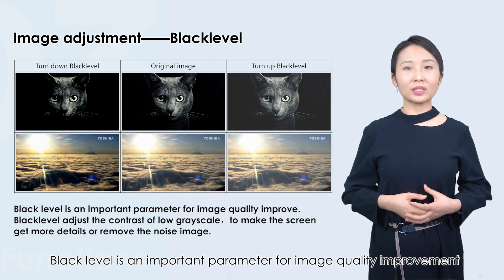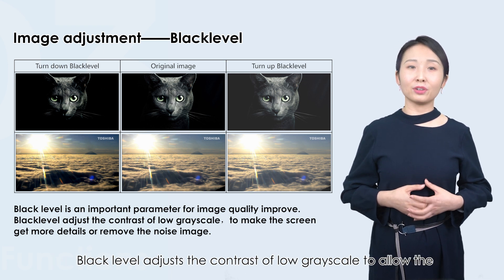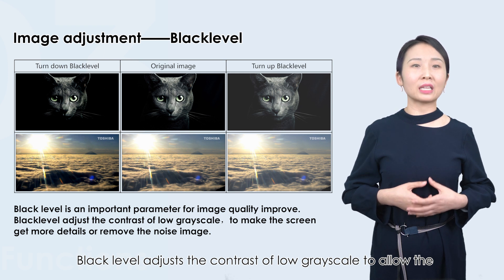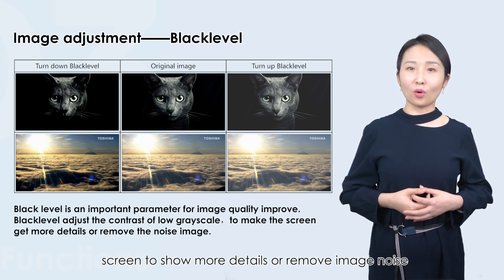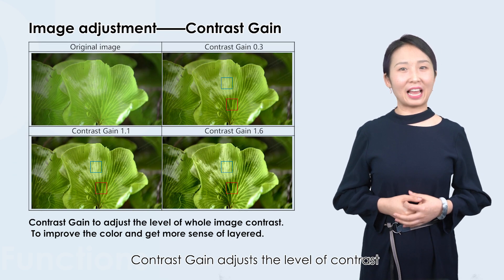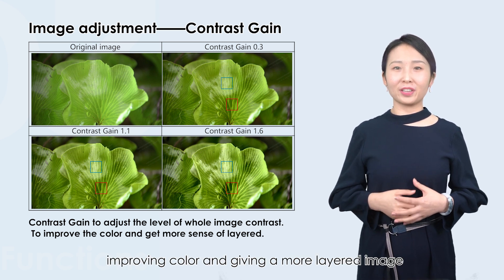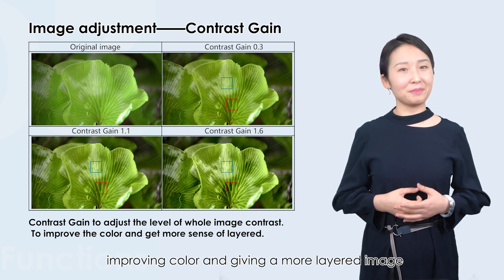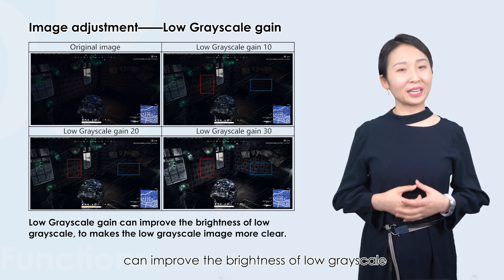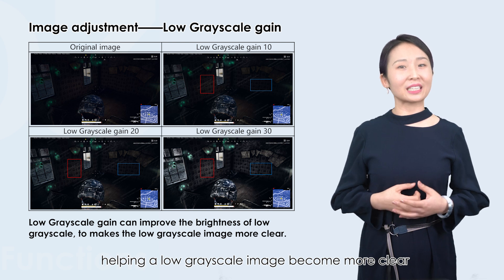Black level is an important parameter for image quality improvement. Black level adjusts the contrast of low grayscale to allow the screen to show more details or remove image noise. Contrast gain adjusts the level of contrast in the entire image, improving color and giving a more layered image. Low grayscale gain can improve the brightness of low grayscale, helping a low grayscale image become more clear.